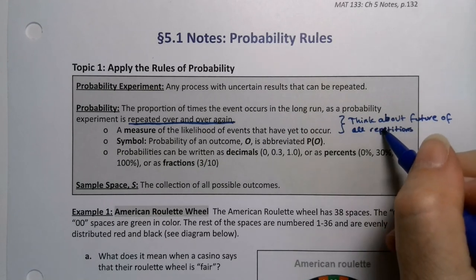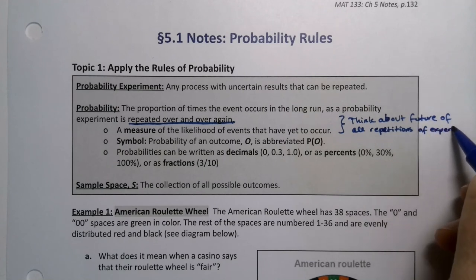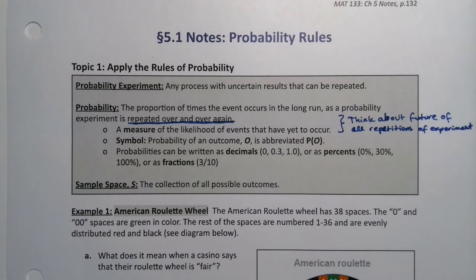Imagine you can repeat over and over that experiment. The probability will be the chances of something happening when you imagine all those repetitions of the experiment. An experiment sounds so formal, but it could be something as simple as tossing a die or tossing a coin. Those are probability experiments.